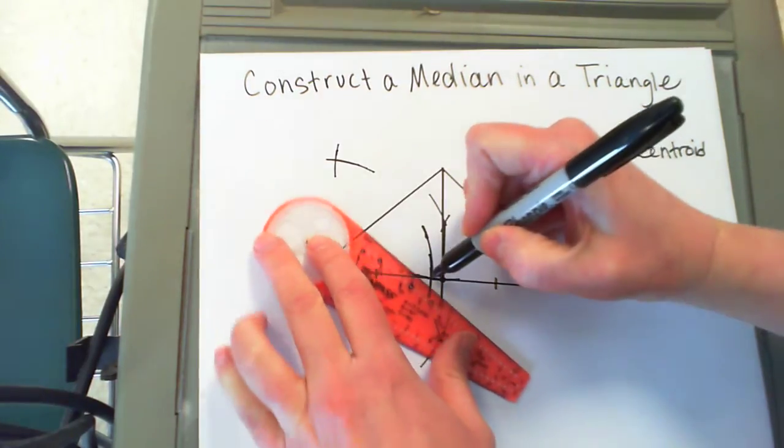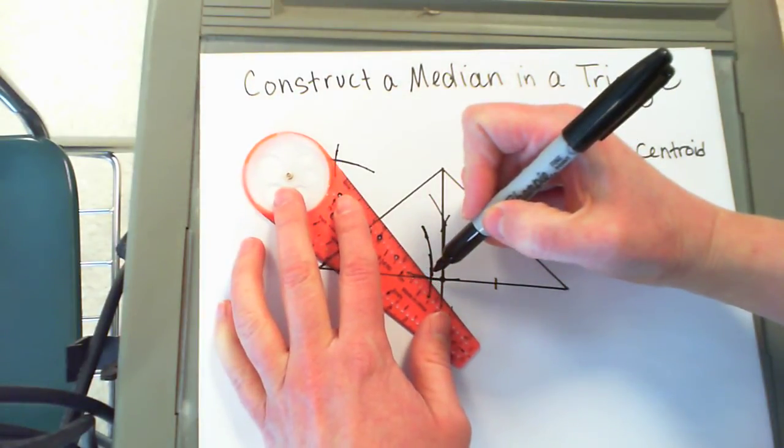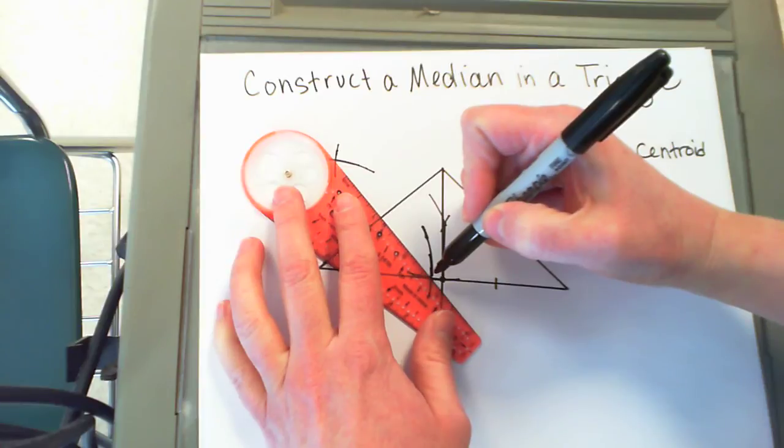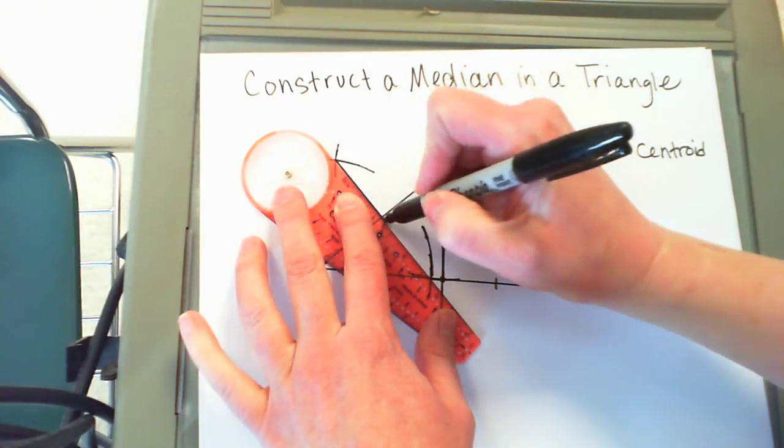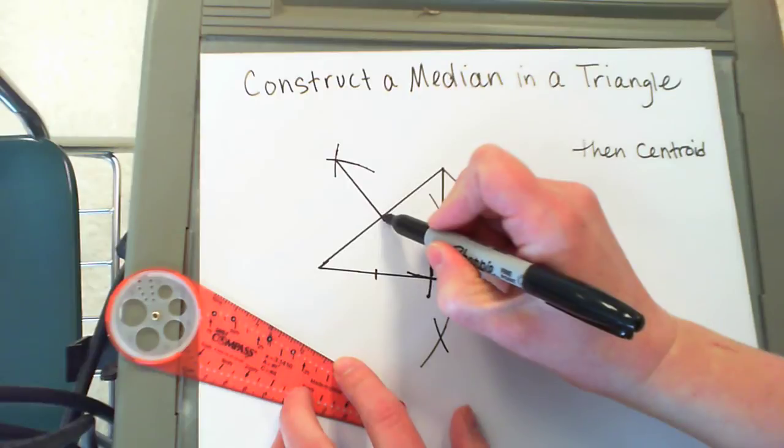Now I connect these two places of intersection where the two arches intersected, even though it looks like it's on top of the side here, just to find the midpoint.